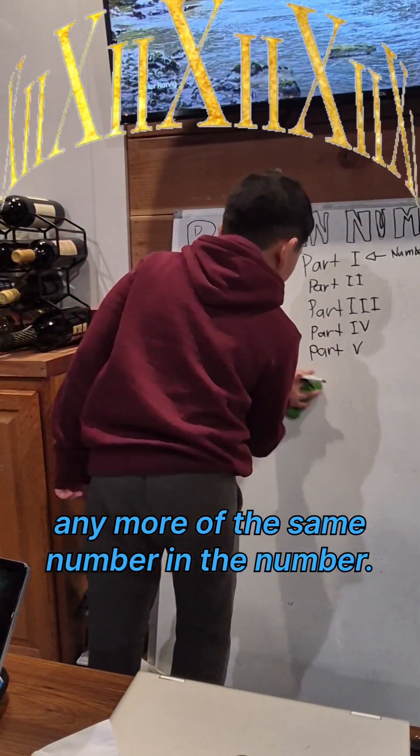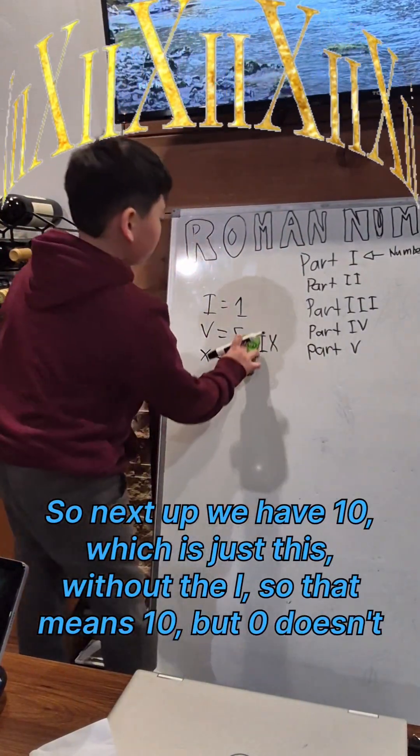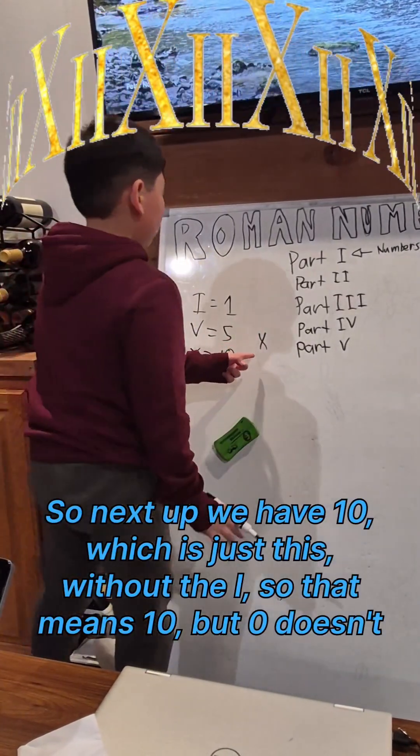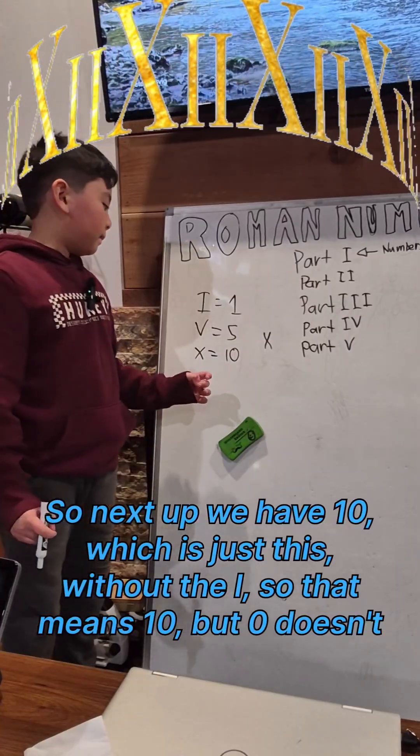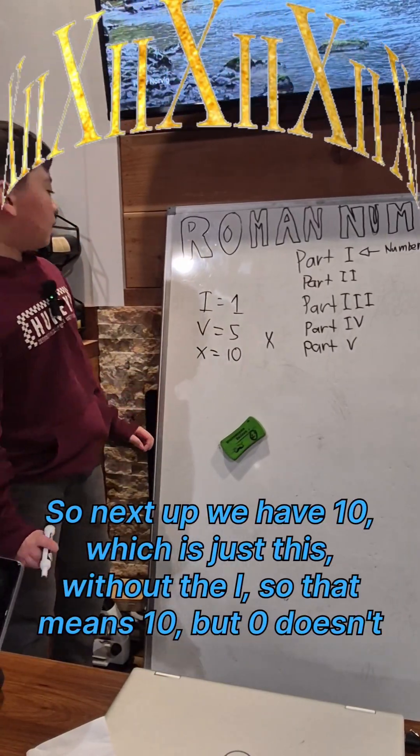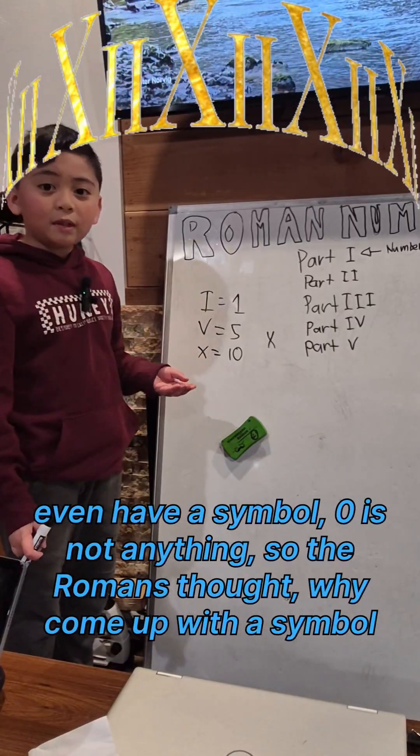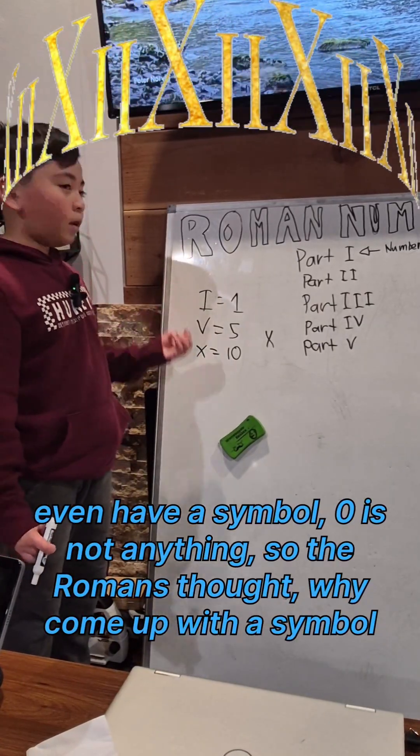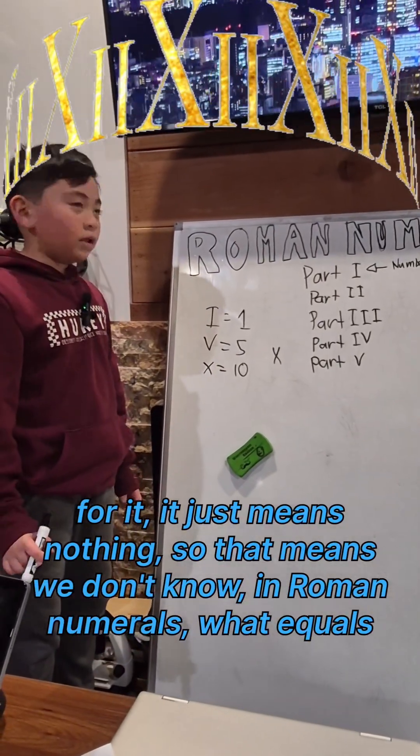Next up we have 10, which is just X. And zero doesn't even have a symbol. The Romans thought, why come up with a symbol for it? It just means nothing.